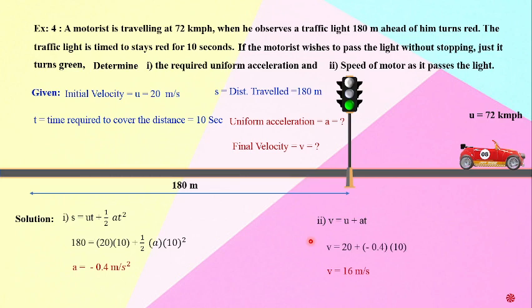So this was expected to be found out from this particular problem. Required uniform acceleration: here it is retardation of minus 0.4 meters per second squared, and final velocity v equals 16 meters per second. So this is how we have found out the required parameters for this particular sort of problem. I hope you have understood this problem thoroughly.